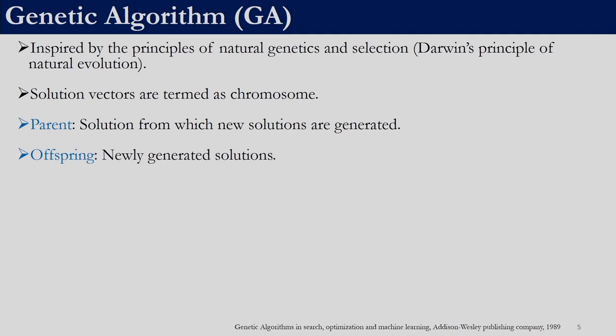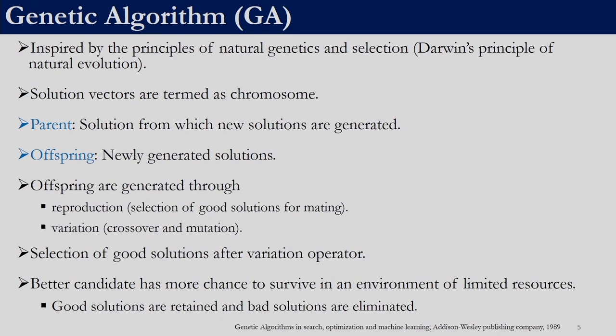Genetic algorithm is inspired by the principles of natural genetics and selection. It is based on Darwin's principle of natural evolution. In genetic algorithm, solution vectors are termed as chromosomes. There are two types of chromosome: parent chromosome and offspring chromosome. Parent chromosomes are the solutions from which new solutions should be generated, whereas offspring chromosomes are the newly generated solutions. Similar to other techniques, this is also a population-based technique. From the population we will extract a few good members and term them as parents, and we will use these parents to produce the offspring. This offspring is generated through reproduction and variation.